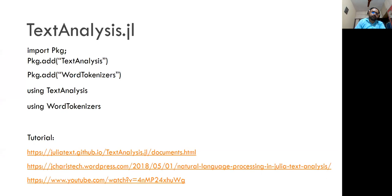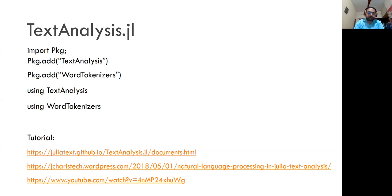You can also use the TextAnalysis.jl package if you want to do more in-depth natural language processing, because the earlier TextSummarizer does only a limited job — it just does extractive summarization. To use the TextAnalysis package, again you need to import package, then use the add method to install it. Once installed, you need to say 'using TextAnalysis' to start using the package. Some tutorials on TextAnalysis links have been included in the slides for your reference.